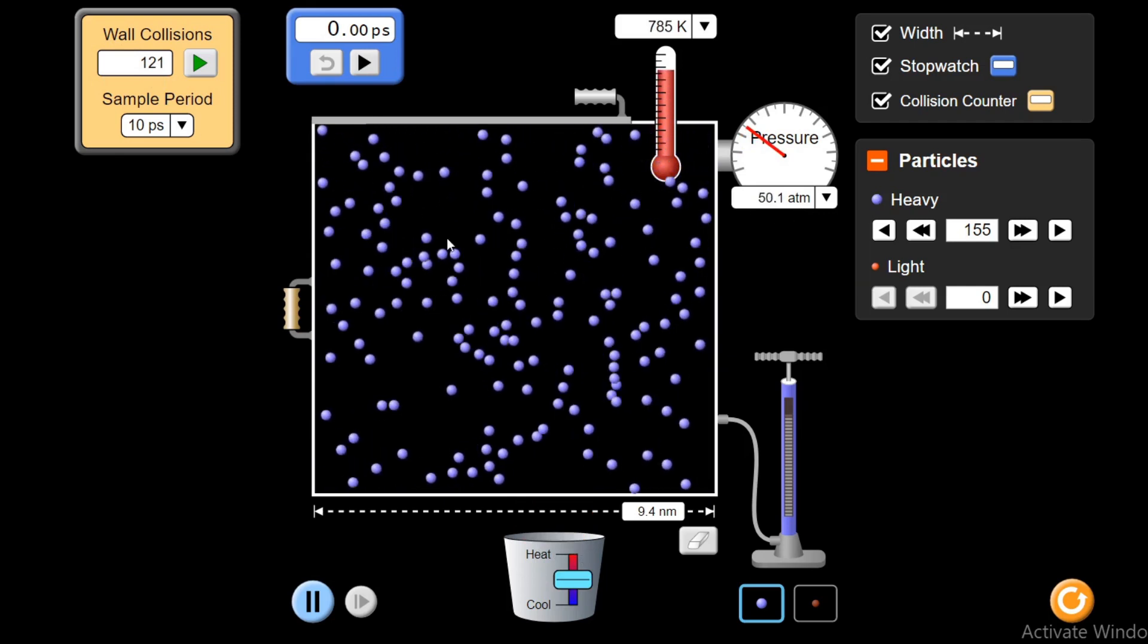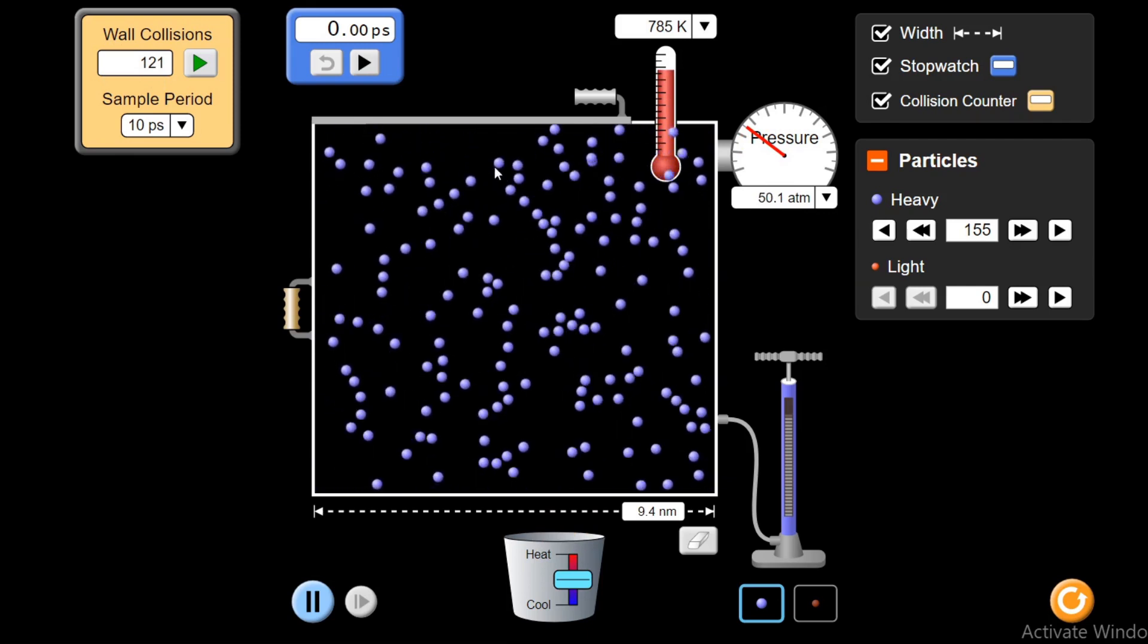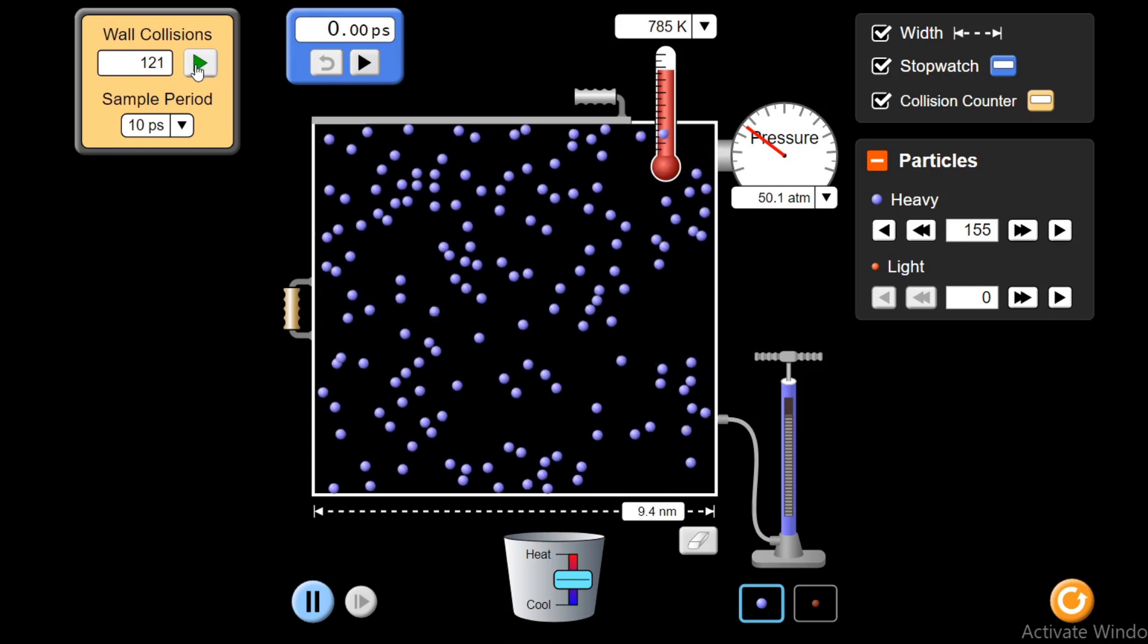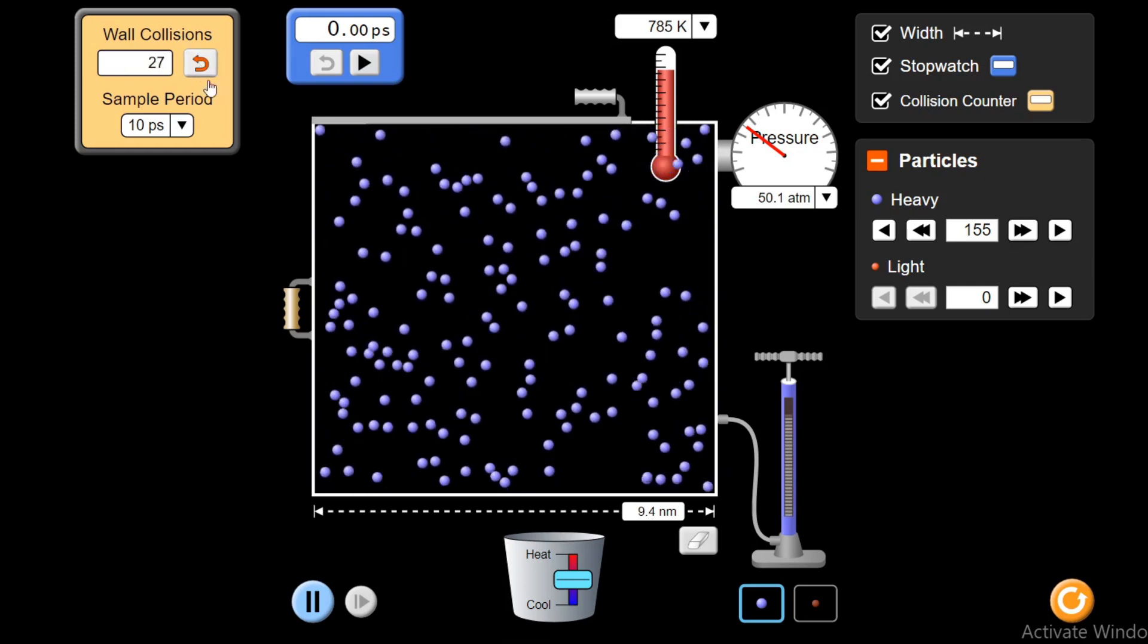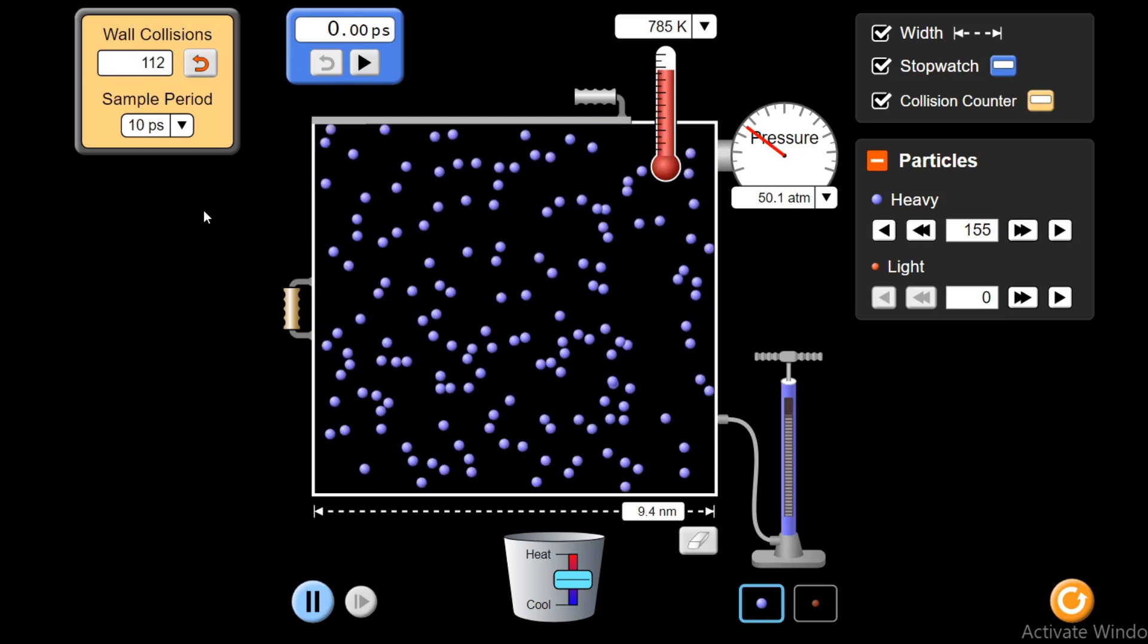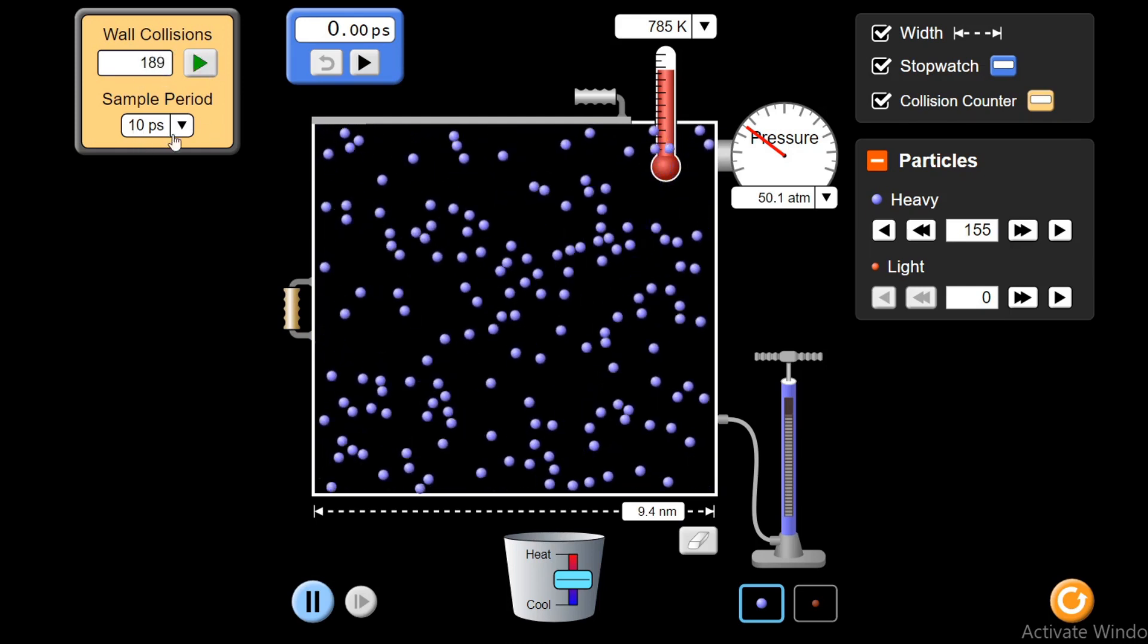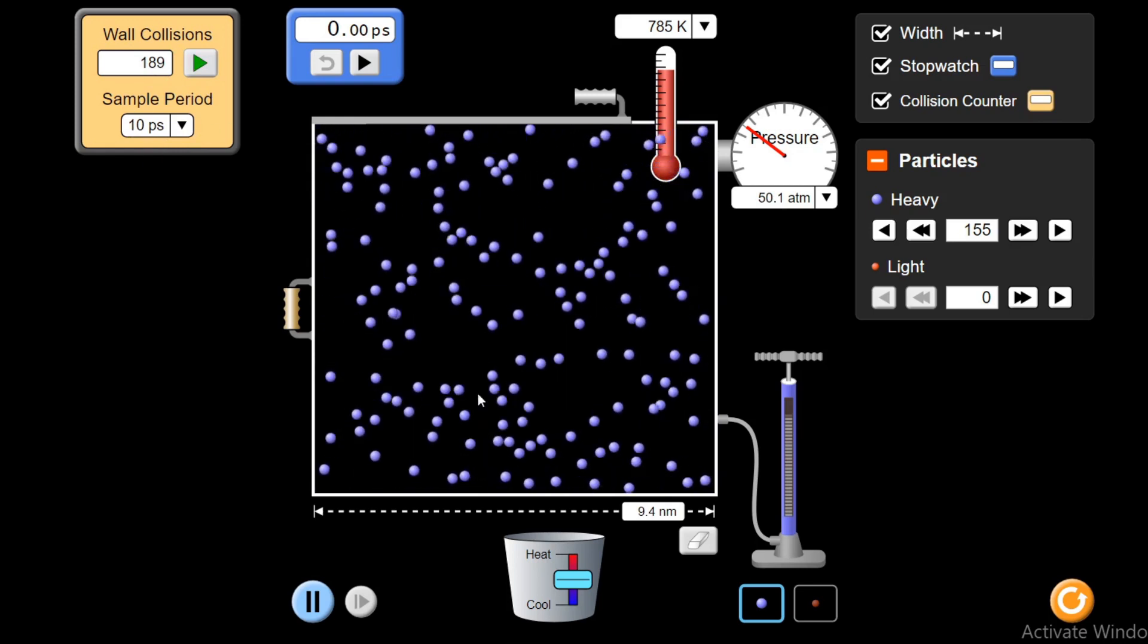Because I have imparted energy, high energy they are having and they are colliding with high force, high velocity with the walls and they are exerting more pressure. And if I count the number of collisions, they must have increased because they are colliding more frequently with the walls. 189 collisions in 10 picosecond duration, this is sample period.